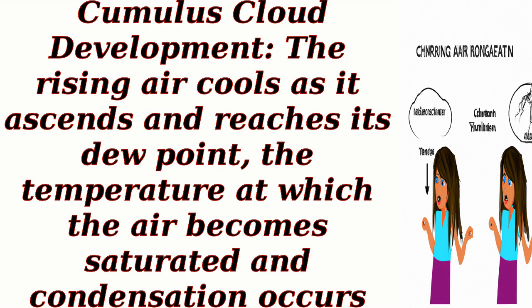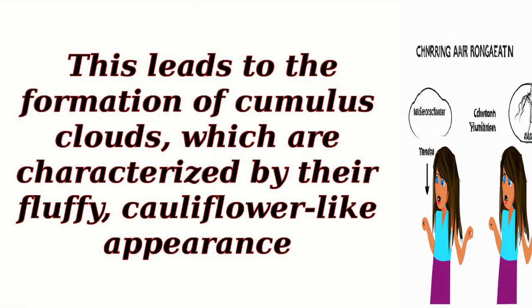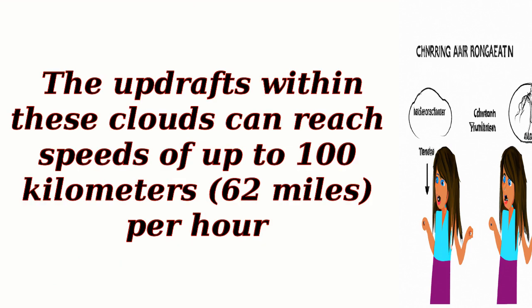Cumulus Cloud Development. The rising air cools as it ascends and reaches its dew point — the temperature at which the air becomes saturated and condensation occurs. This leads to the formation of cumulus clouds, which are characterized by their fluffy, cauliflower-like appearance. The updrafts within these clouds can reach speeds of up to 100 kilometers (62 miles) per hour.